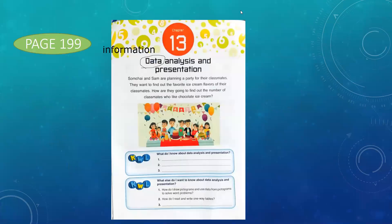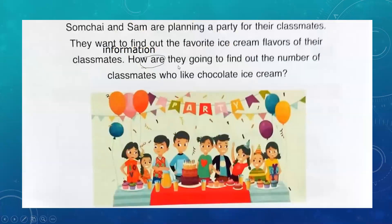Going back to our lesson. Look at the picture found on page 200 of your textbook. Somchai and Sam are planning a party for their classmates. They want to find out the favorite ice cream flavors of their classmates.